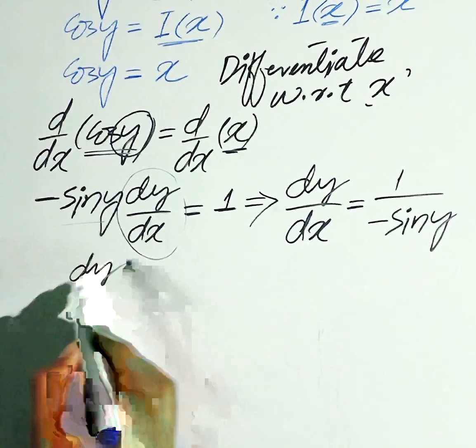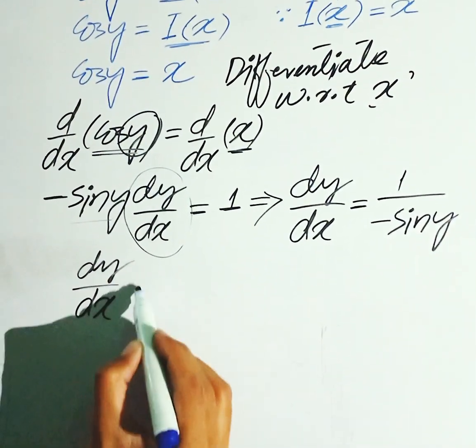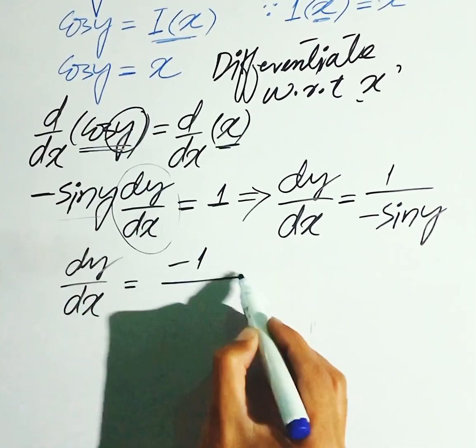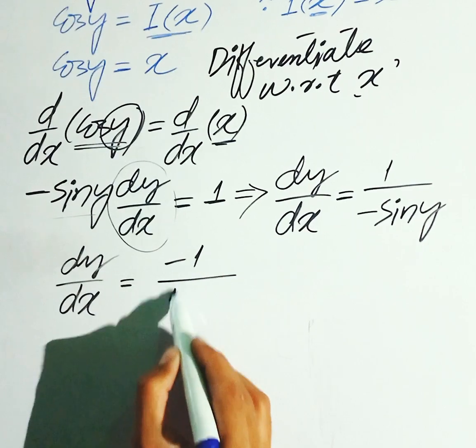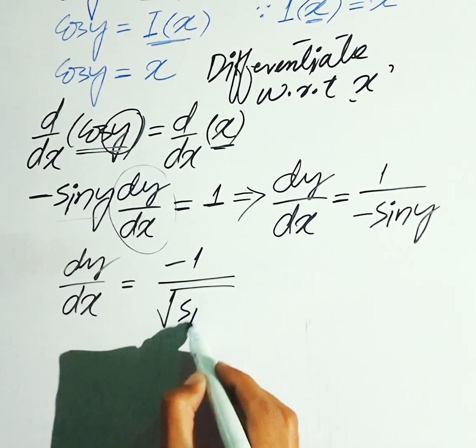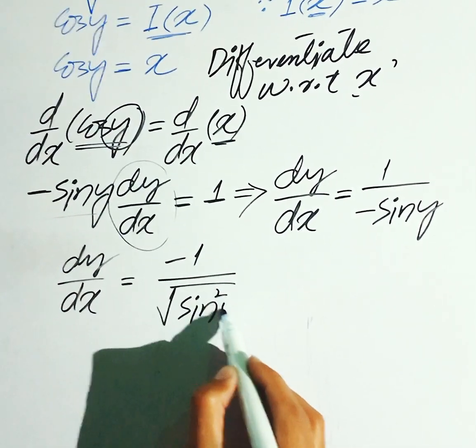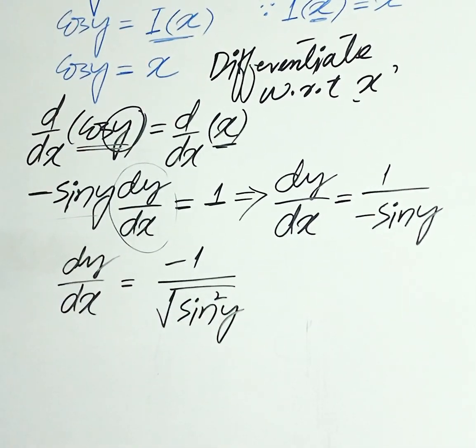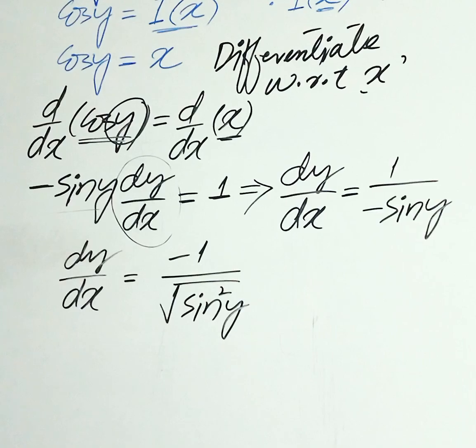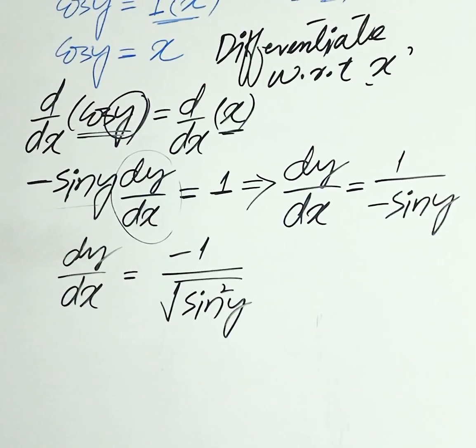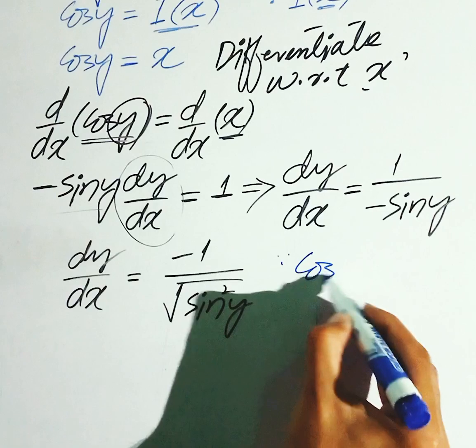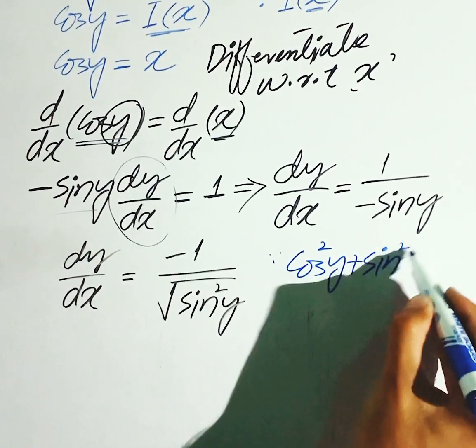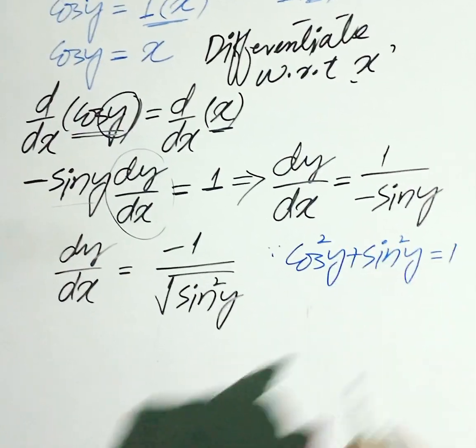Now, dy over dx is equal to minus 1 divided by sin y ko hum yun likh sakti hai, square root of sin square of y. Because square root ke sakti cancel out roo ki waapis saab ke paas sin y á jayega. Yahan peh, ham ye result y use karhenge ki,